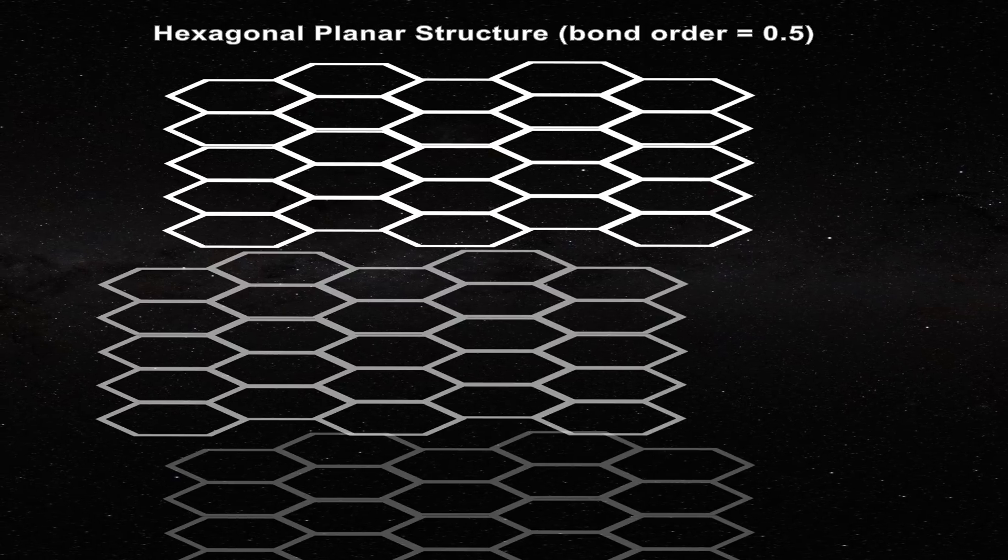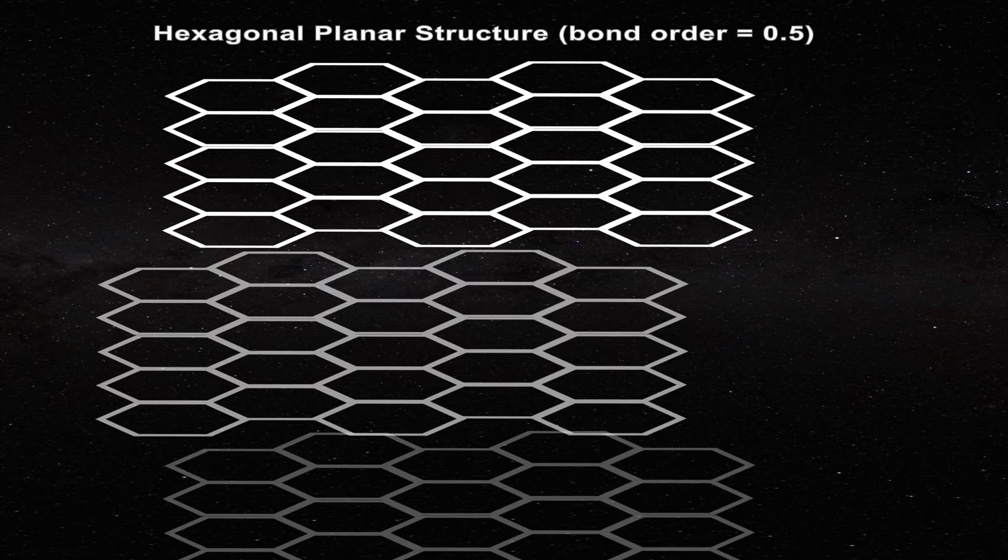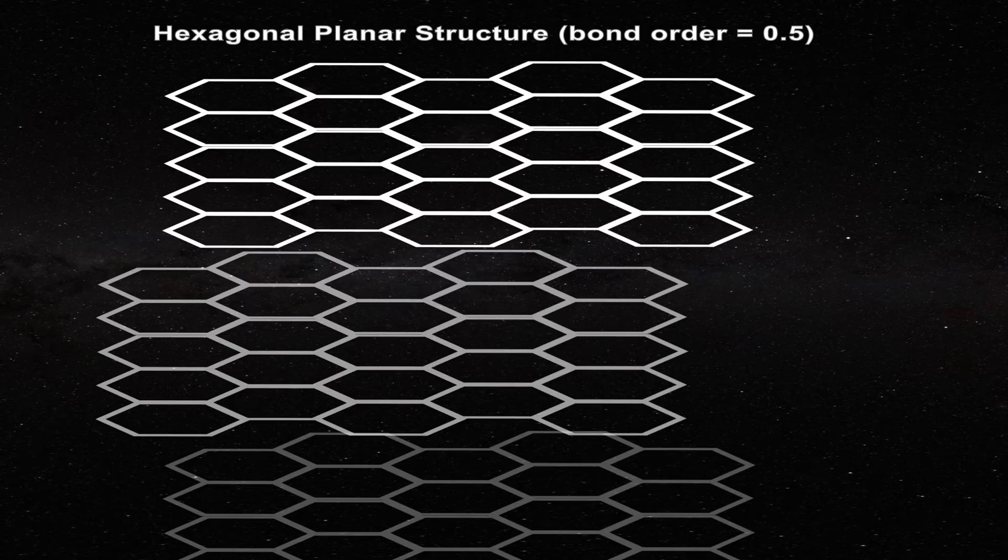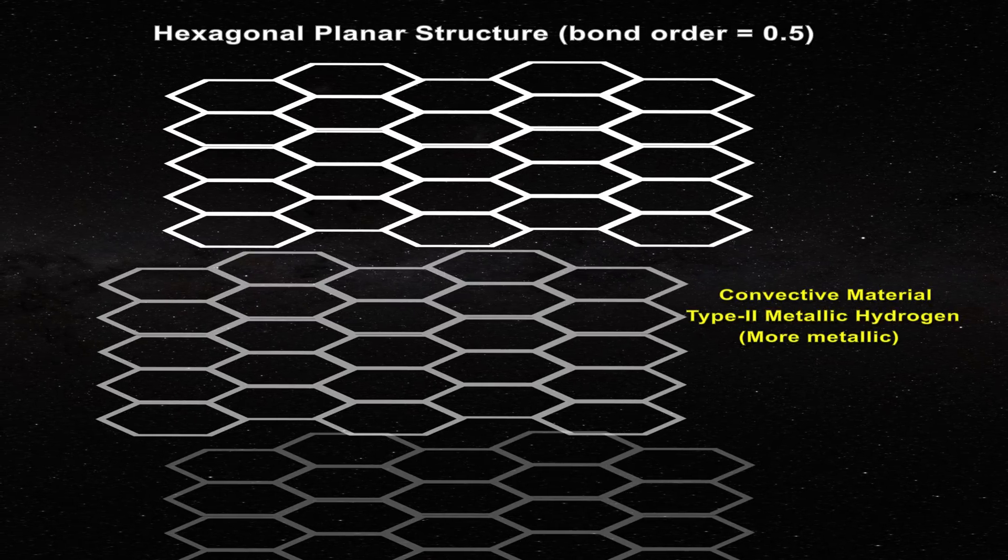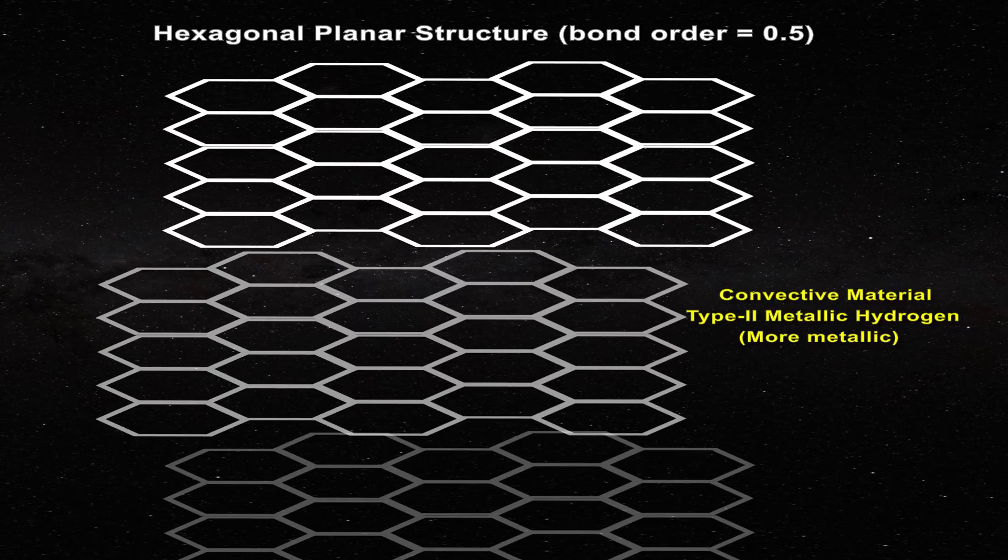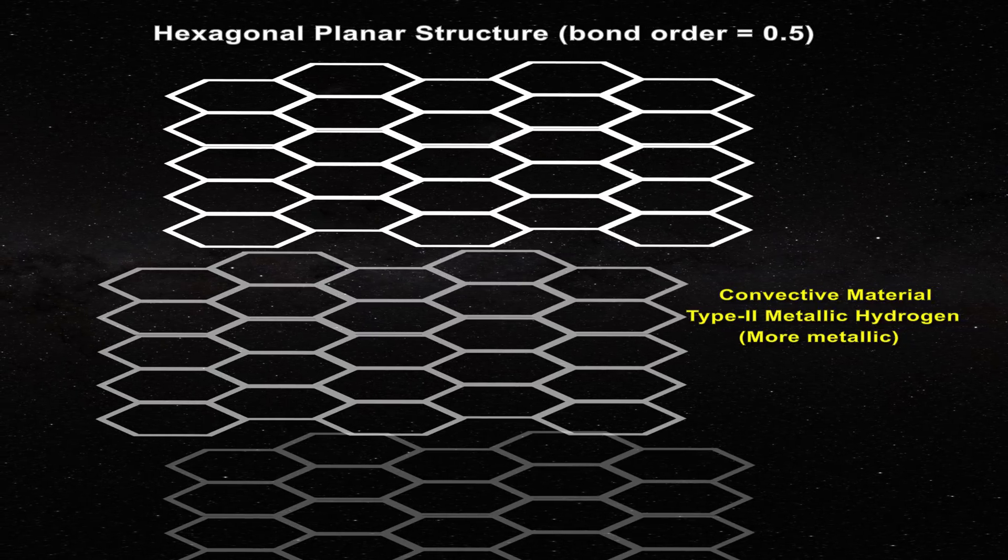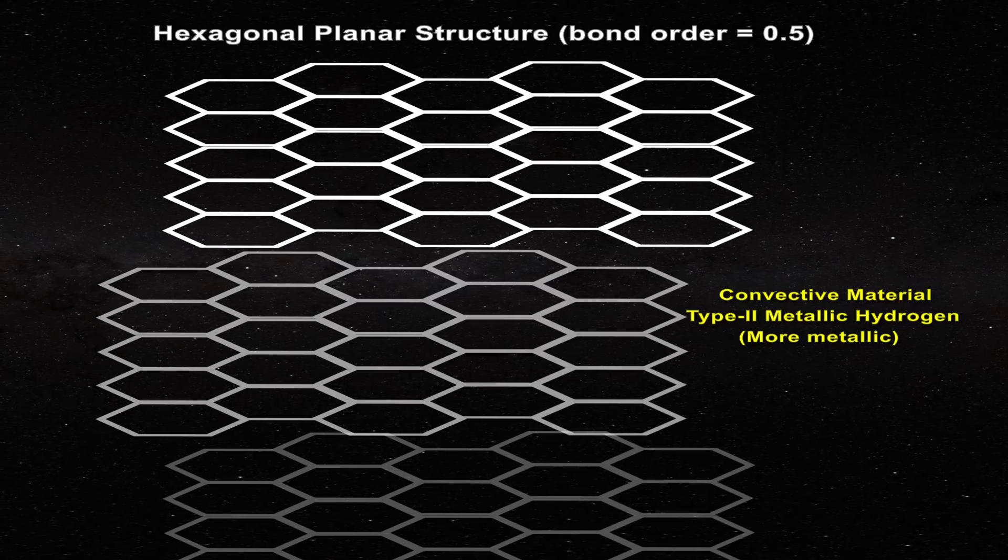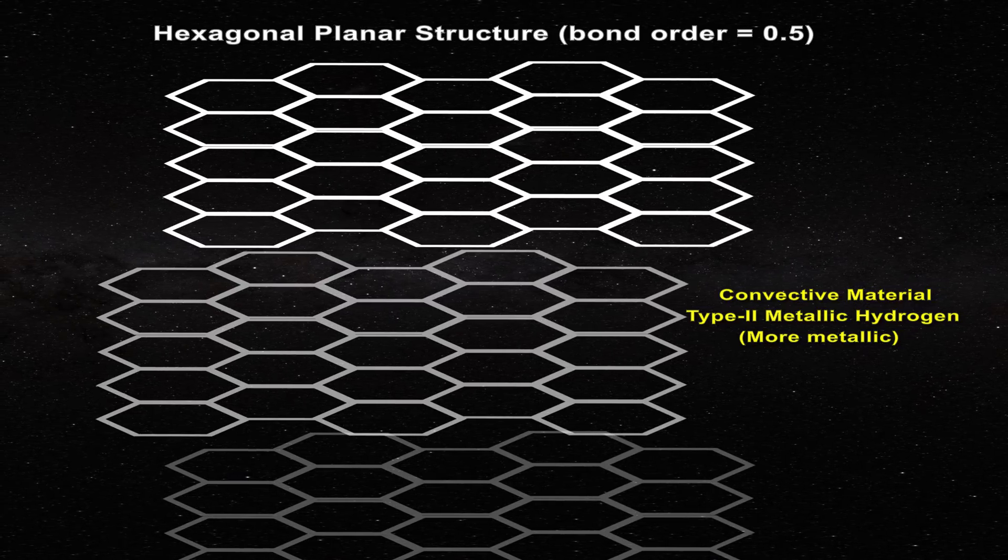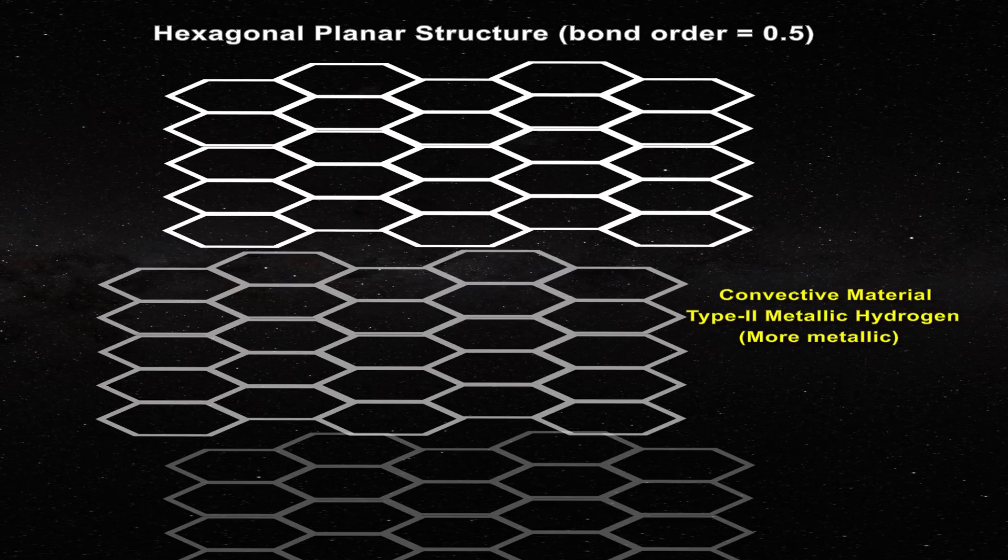This conclusion arises from theoretical studies involving the hexagonal form of metallic hydrogen. I refer to this form as type 2 metallic hydrogen which is also hexagonal planar in nature. It is likely that this is the same material which is found in sunspots and in faculae often associated with sunspot formation.